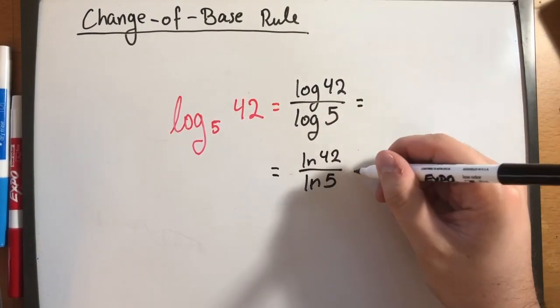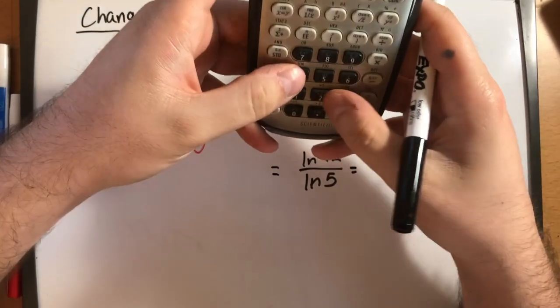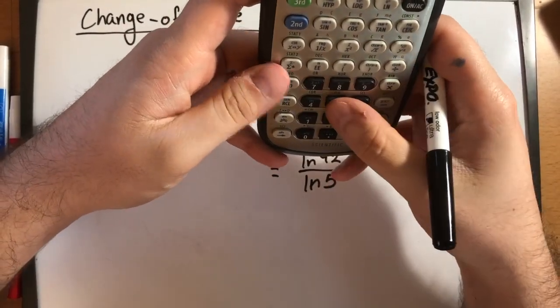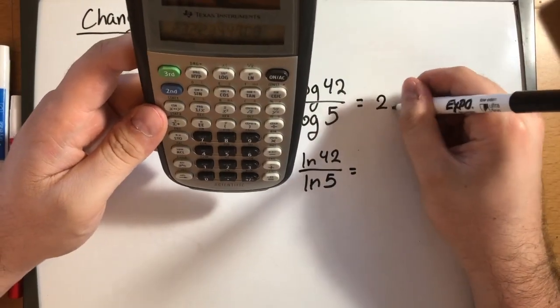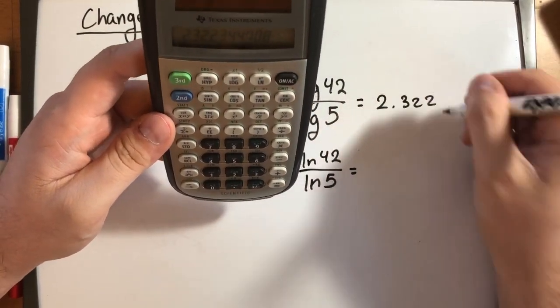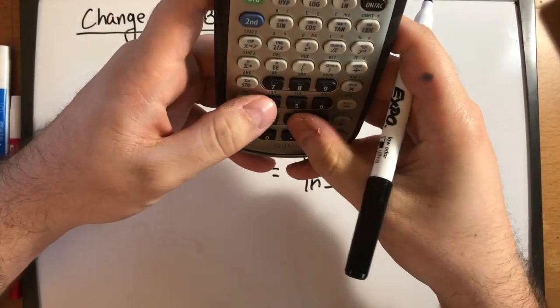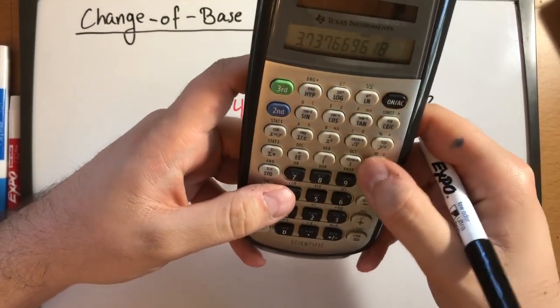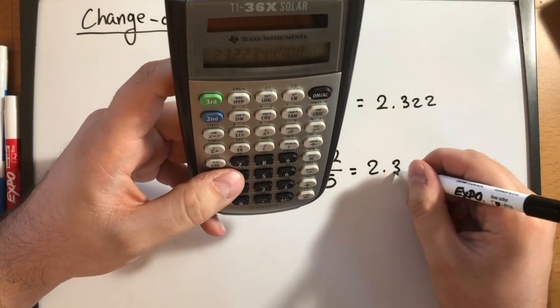So here, just to prove we'll get the same thing. If I were to do 42 common log divided by 5 common log, I would get 2.322. Let's do it with the natural log. If I were to do 42 natural log divided by 5 natural log, I would get the same exact answer.